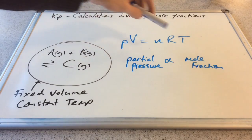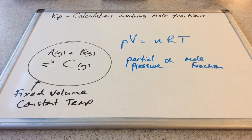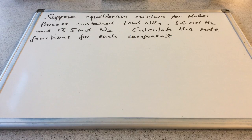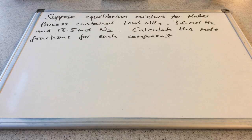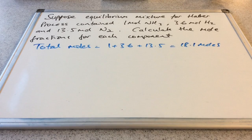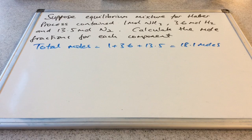What I need to do now is explain what we mean by mole fraction, and I'm going to do that with this calculation. Suppose we had an equilibrium mixture for the Haber process, and it contained 1 mole of ammonia, 3.6 moles of hydrogen, and 13.5 moles of nitrogen. To calculate the mole fractions, the first thing we need to do is calculate the total moles of the components. Adding them together, we get a total of 18.1 moles.